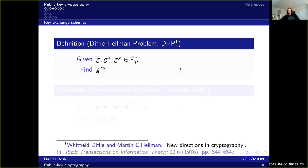Then we have the Diffie-Hellman problem, proposed by Diffie and Hellman back in 1976. Here you're given g, g to the power of x, and g to the power of y in the multiplicative group of integers modulo P excluding zero. Given these three, you're supposed to find g to the power of x times y. Note that if you simply multiply g^x and g^y together, you get g to the power of x plus y - so you need to know one of the exponents to compute g^xy from the other.